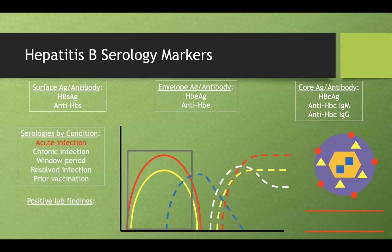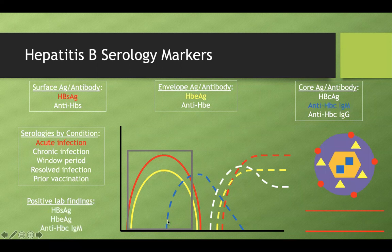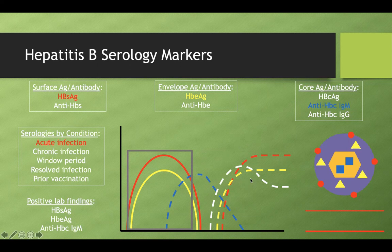In an acute infection, HBsAg is positive, HBeAg is positive, and you'll generally get a positive anti-HBc IgM as well — since IgM antibodies rise first. In a chronic infection, you'll still have HBsAg being produced. You won't see a significant anti-HBs antibody response since the immune system failed to clear the infection.